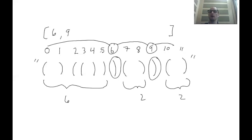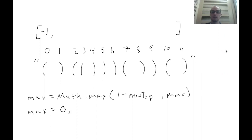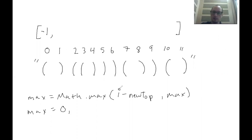Let's go through a round using this concept. On screen we have our stack represented as an array, and our string with index values above each paren. We're going to be tracking a max. Our max equals the max of the difference between I, our current index, and whatever is on top of our stack. We take the max of that calculated value and our current max. We initialize the stack with negative one.